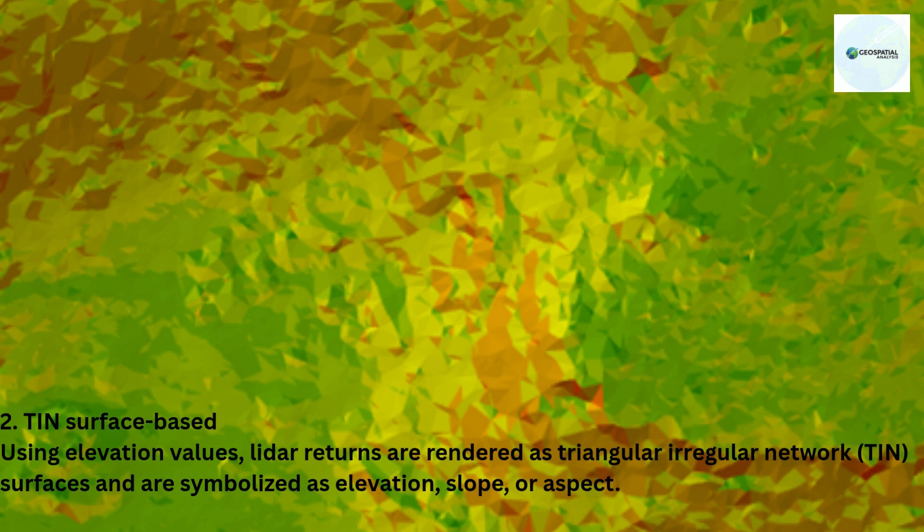TIN surface-based: using elevation values, LiDAR returns are rendered as triangular irregular network (TIN) surfaces, and are symbolized as elevation, slope, or aspect. TIN line-based: using elevation values, LiDAR returns are rendered as contour lines or triangular irregular network (TIN) edges.